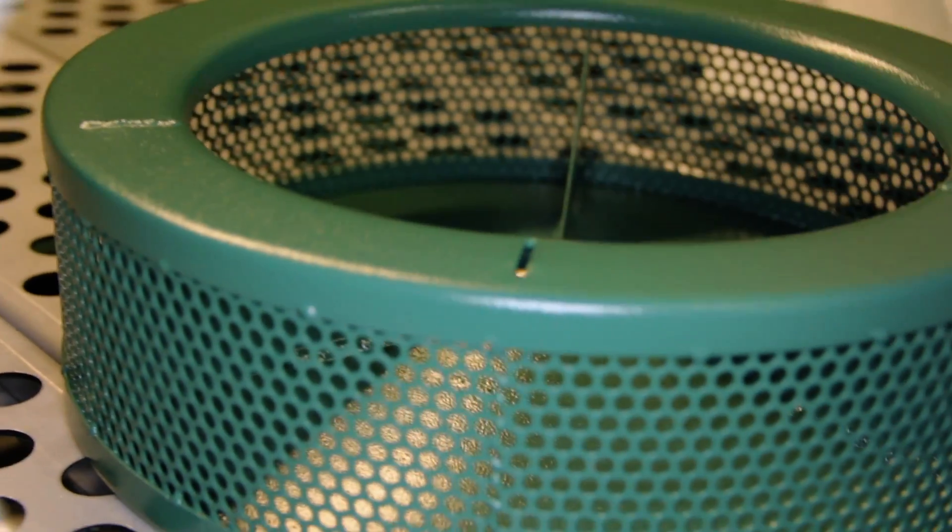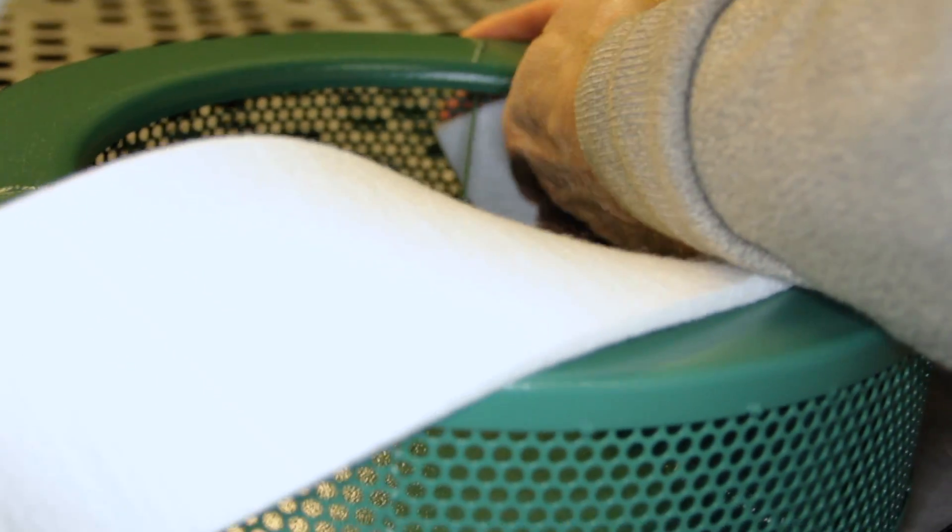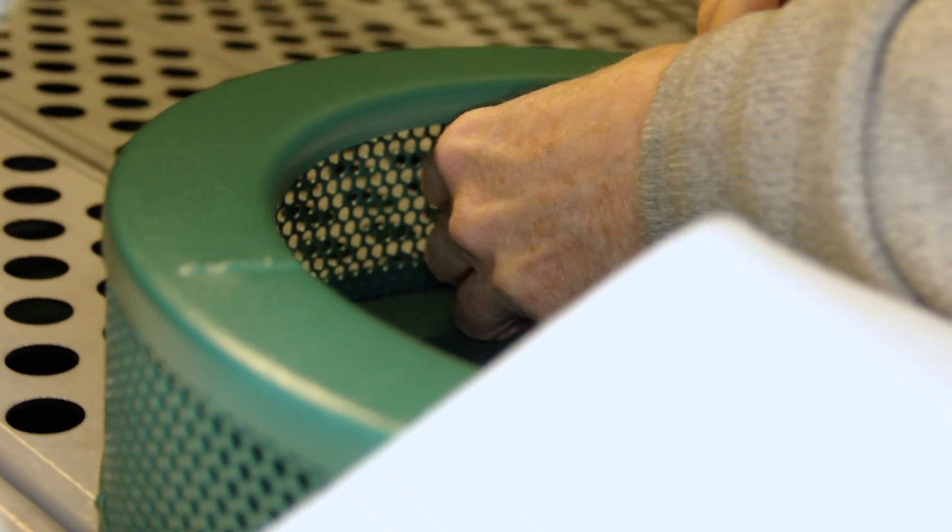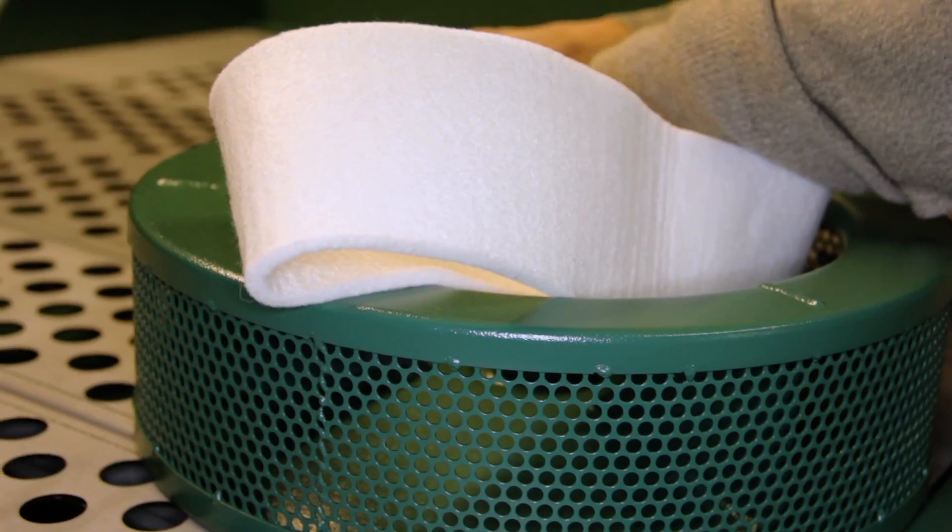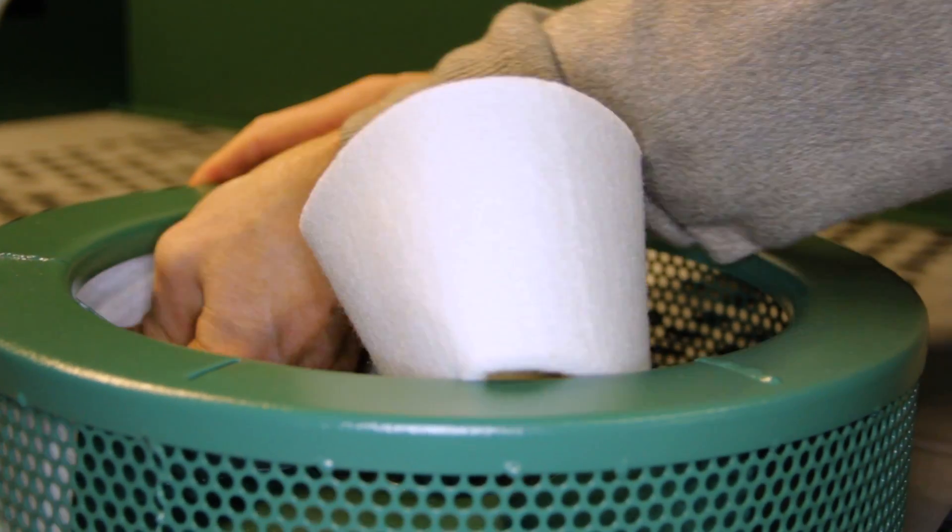This video illustrates how to install both the primary felt and throwaway liner in a centrifugal CM drum. The first thing you want to do is locate the slot on the face of the drum. This is where both edges of the filter need to be aligned. The starting point is directly opposite this slot.